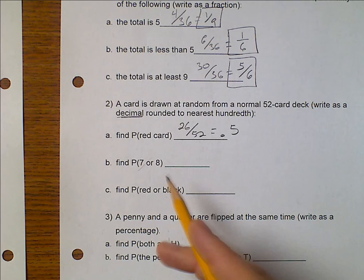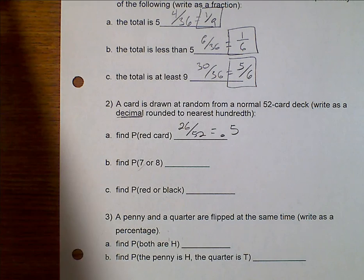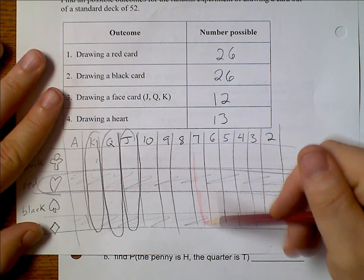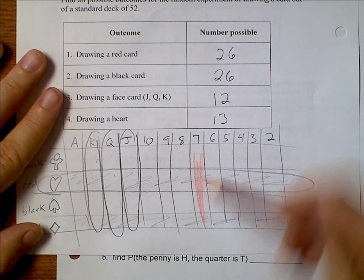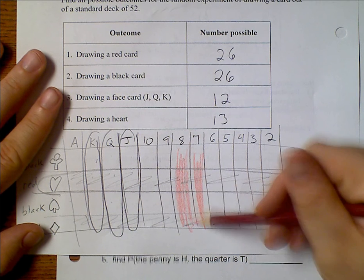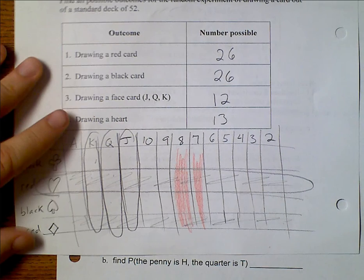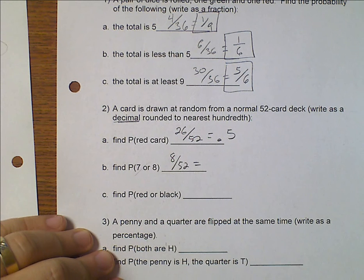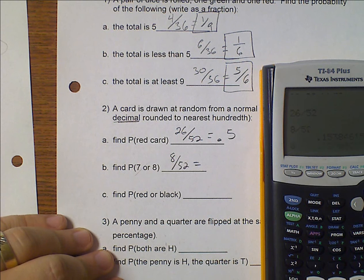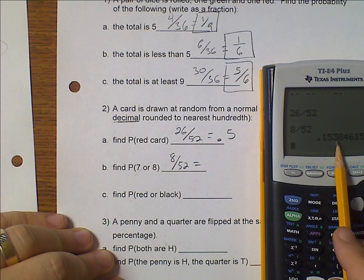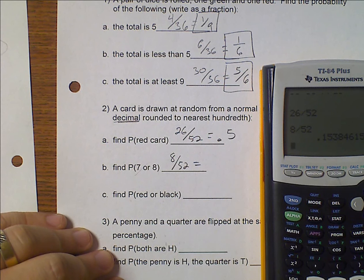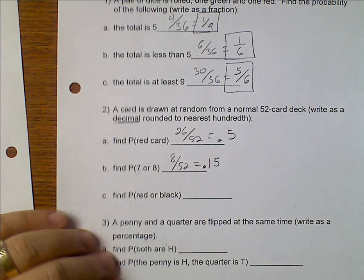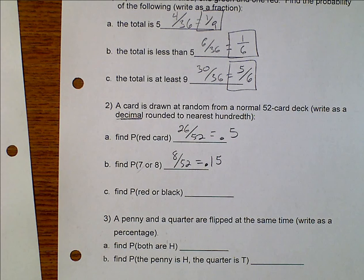The probability that you get either a 7 or an 8. So let's go ahead and come back over here. We didn't list this, but let's go ahead and figure it out. These are my 7s. There are 4 of them. So that makes a total of 8. So 8 out of 52 is 0.153. We want the nearest hundredth, so we're just going to say 0.15 because that 3 does not round up.